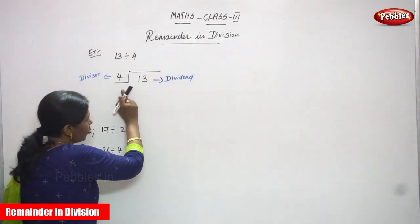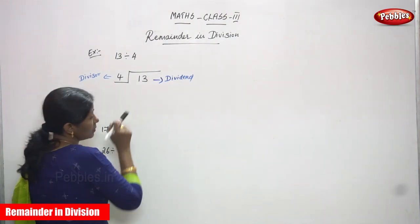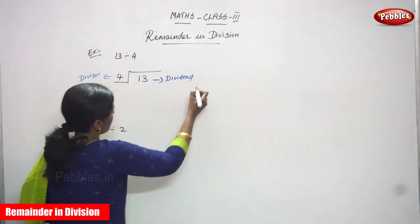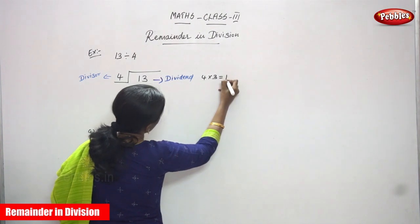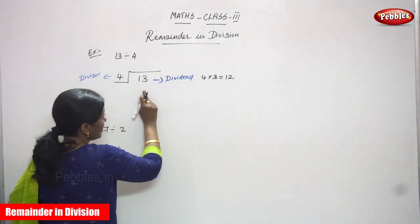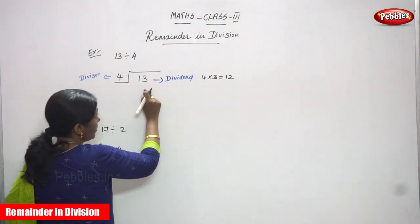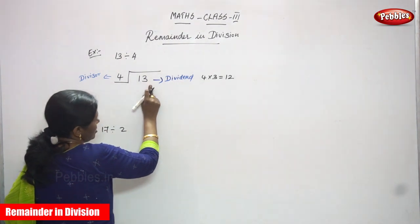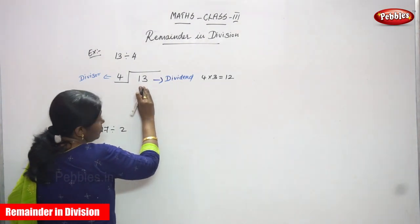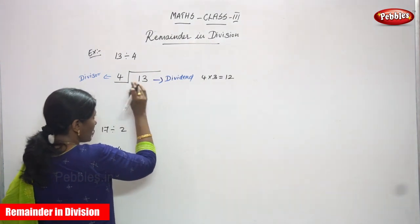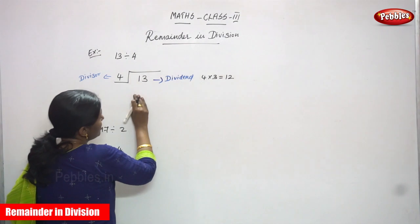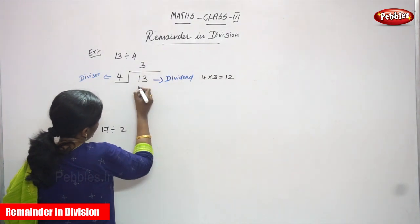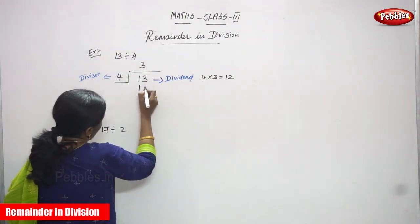So you must use the 4 times table up to 13. So 4 ones are 4, 4 twos are 8, and 4 threes are 12. So 4 into 3, you can get 12. You must write the number less than or below the dividend — always give the nearest value. So 4 threes are 12 — you must write 3. This is our quotient. So 4 threes are 12 — you must write 12.